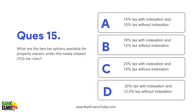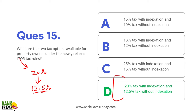What are the two tax options available for property owners under the newly relaxed long-term capital gain rules? In the union budget, the LTCG tax rate for properties was slashed from 20% to 12.5%, but the indexation benefit was removed. Due to backlash, now there are two options: either pay 20% tax with indexation, or 12.5% without indexation.